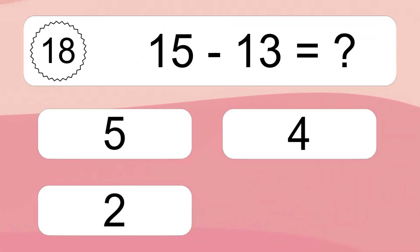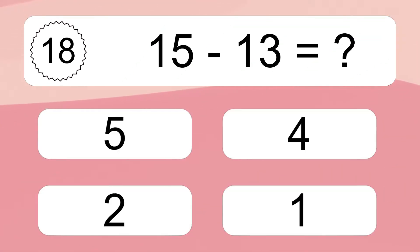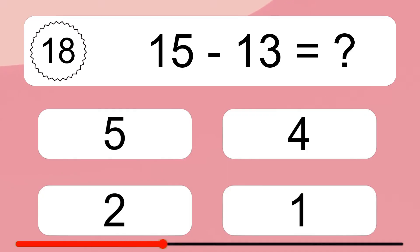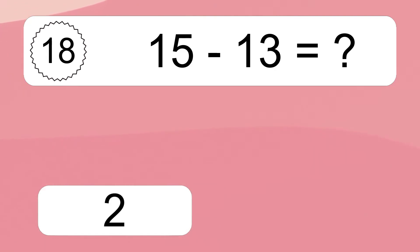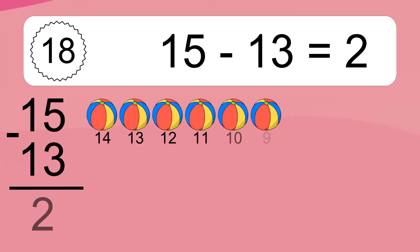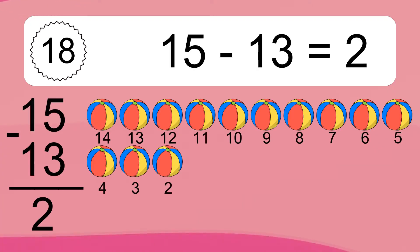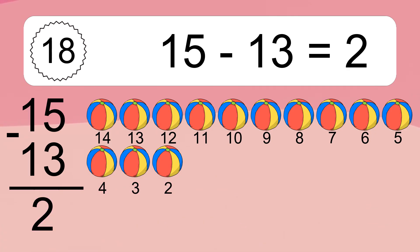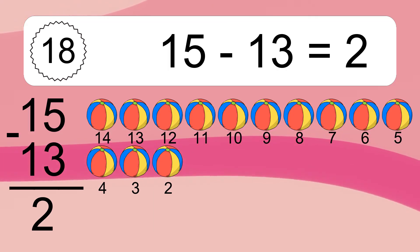15 minus 13 equals what? 15 minus 13 equals 2. Let's count it: 14, 13, 12, 11, 10, 9, 8, 7, 6, 5, 4, 3, 2.